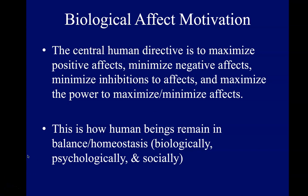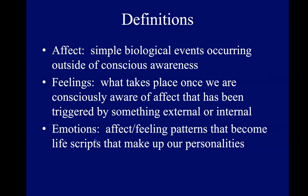The primary task for humans is to maximize the positive and minimize the negative — similar to utilitarianism. We do this by minimizing the blocks to these affects and maximizing the power to recognize what is happening biologically before everything gets out of our hands. Here are some definitions for words people use interchangeably but that represent different states or processes: affect is the biological event that happens automatically in response to something internally or externally; feelings are what take place once we become aware of the affects and their corresponding biological component; emotions are patterns of affects and feelings that make up the structured ways of responding to the environment — these are our life scripts that make up our personalities.